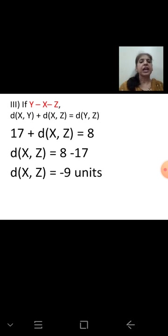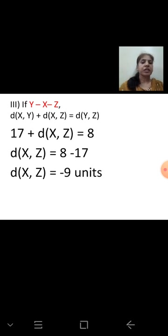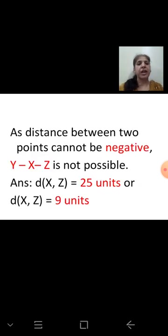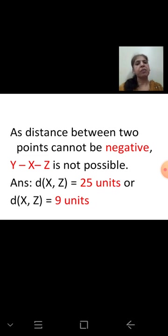Case 3: X lies between Y and Z, so Y–X–Z. Then XY + XZ = YZ, giving 17 + XZ = 8, so XZ = 8 minus 17 = negative 9. Since distance cannot be negative, this possibility is not valid. Therefore distance XZ = 25 units or 9 units.